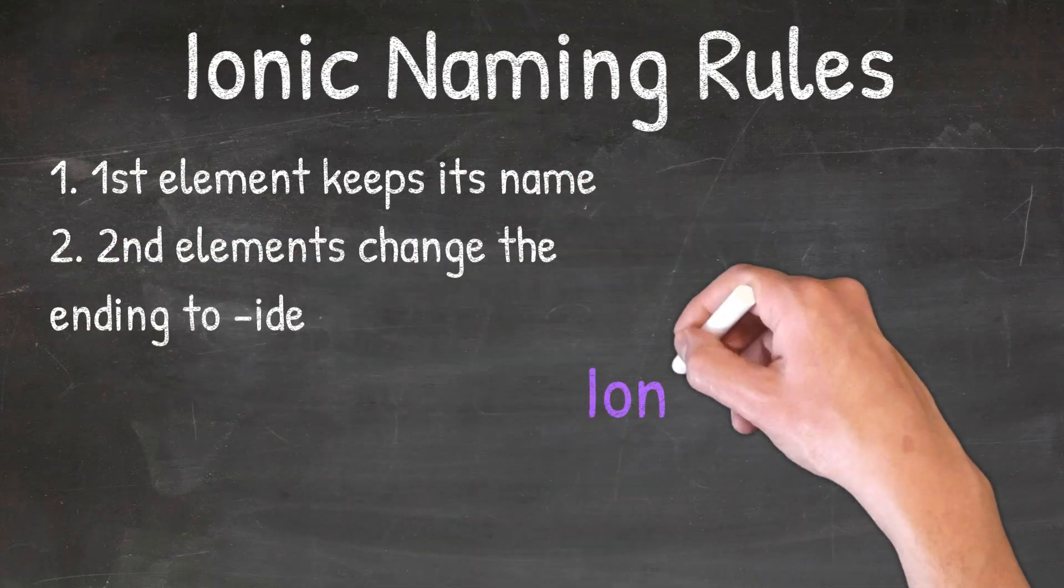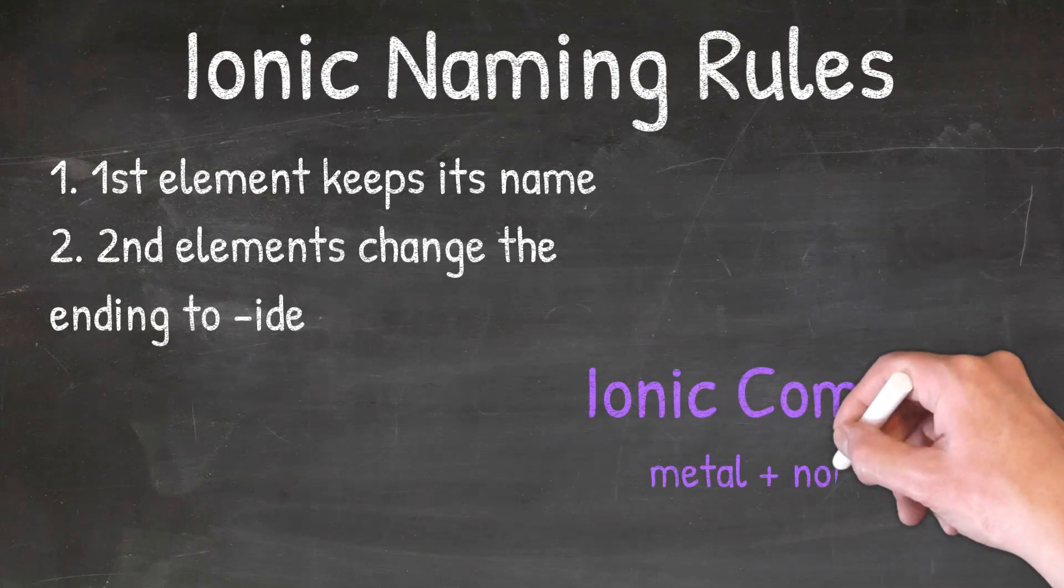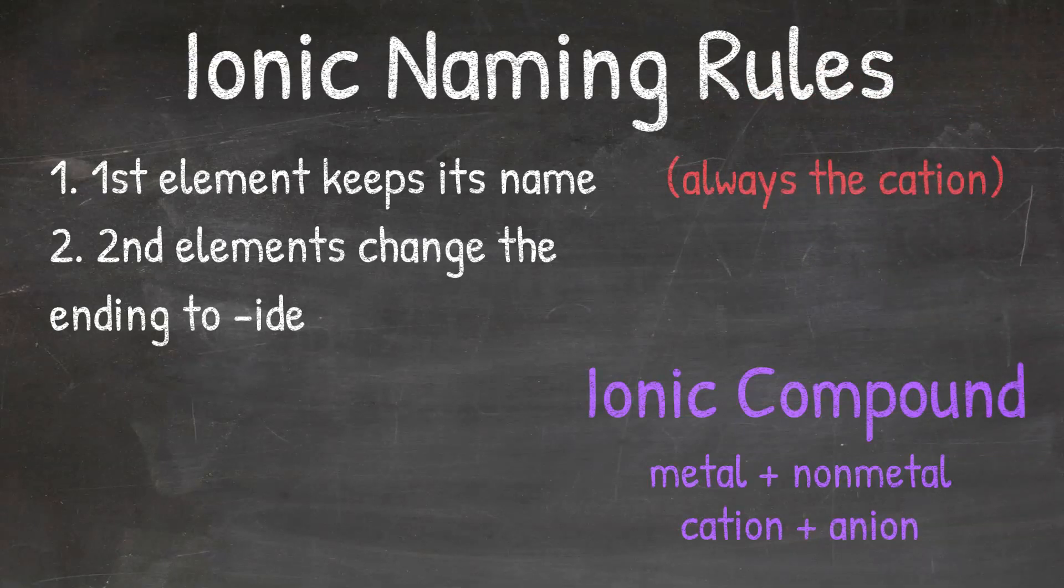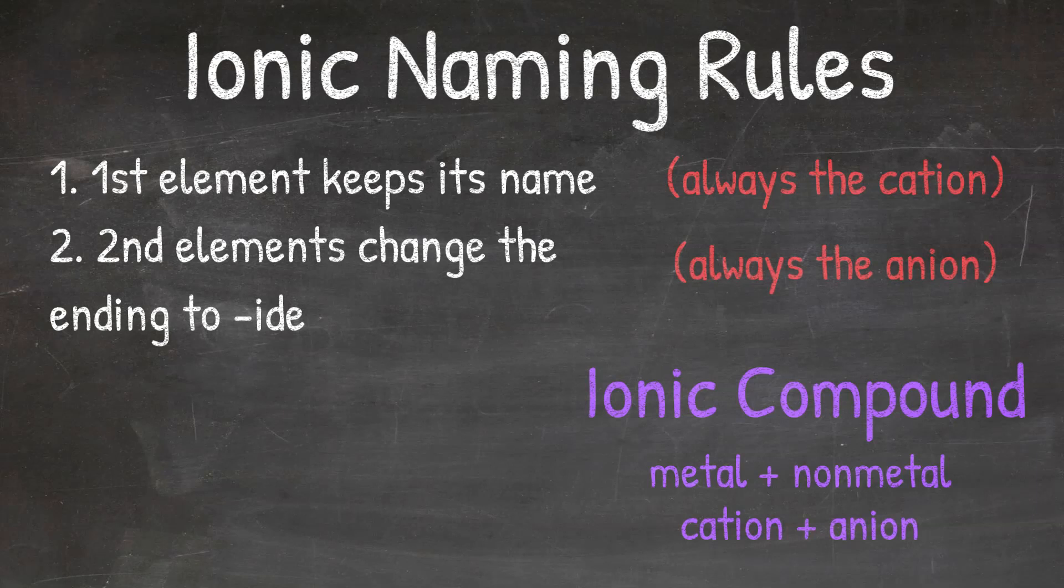Remember that an ionic compound is formed between a metal and a nonmetal, or a cation and an anion. The metal or the cation will always go first, and the nonmetal or the anion will always go second when we write the names and formulas for ionic compounds.